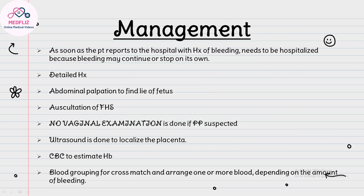As soon as the patient reports to the hospital with a history of bleeding, she needs to be hospitalized because bleeding may continue or stop on its own. Investigations include ultrasound to localize the placenta, complete blood count to estimate hemoglobin, and blood grouping for cross-match. One or more units of blood should be arranged depending on the amount of bleeding.